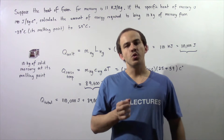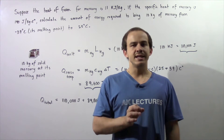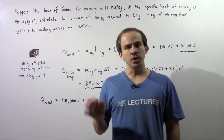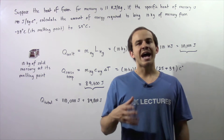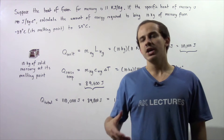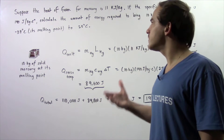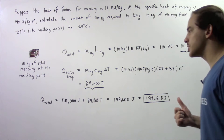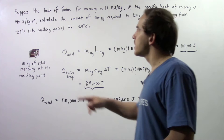In this example, we're going to use the specific heat and the heat of fusion for mercury to calculate how much energy is required to increase the temperature of a certain given amount of mercury. So let's begin.